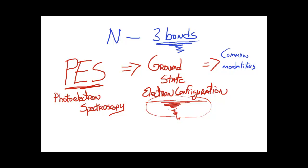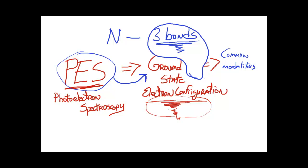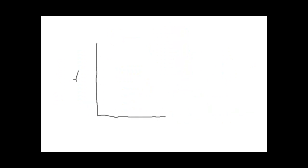So the question is, how can we take this data, construct this for nitrogen, and then provide an explanation for why nitrogen tends to form three bonds in stable molecules? The first thing we want to do is sketch the photoelectron spectrum — the simulated spectrum — for nitrogen.